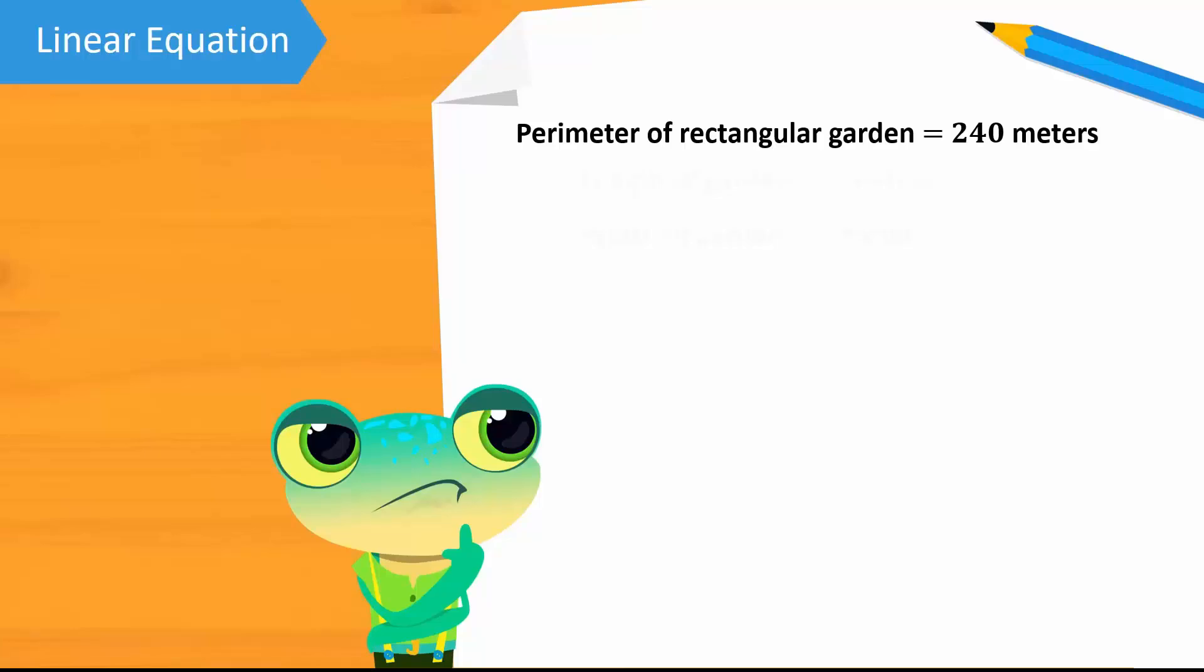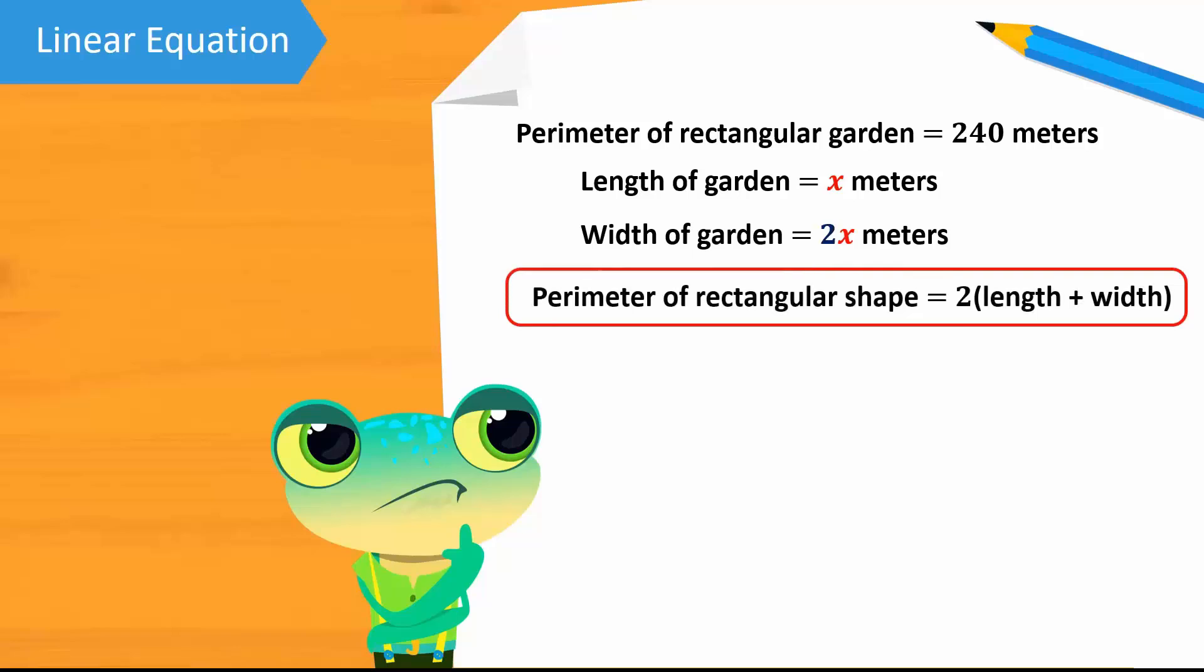We will write the given information first. The perimeter of the rectangular garden is equal to 240 meters. We know that the width is double the length but we don't know the values of either side. So, we will assume the length is equal to x meters. Since the width of the rectangular garden is double the length, it is equal to 2x meters. We know that the perimeter of a rectangular shape is equal to 2 times the length added to the width.